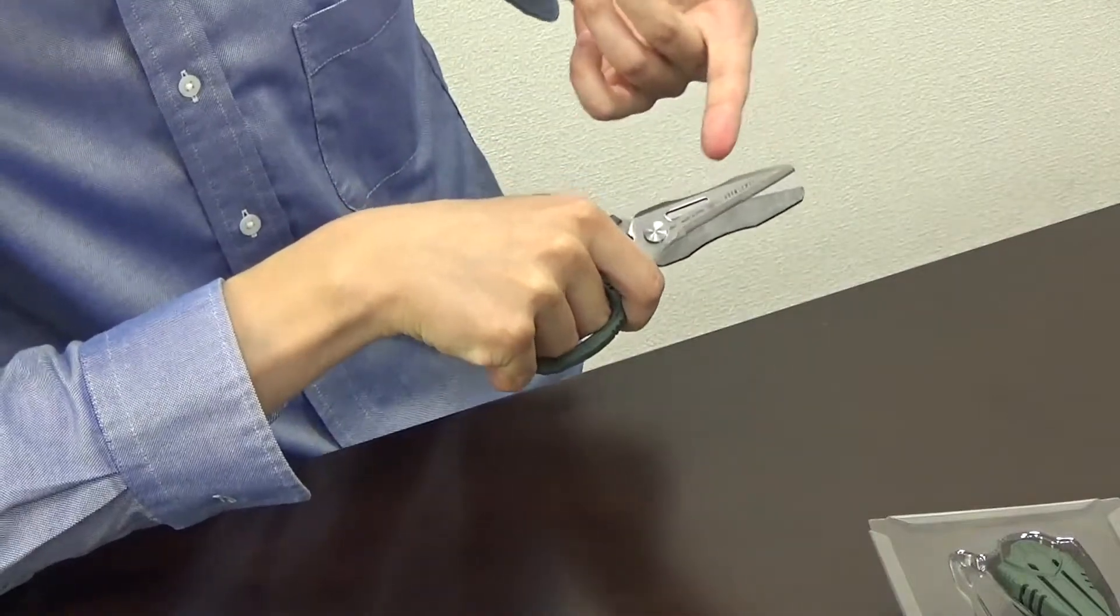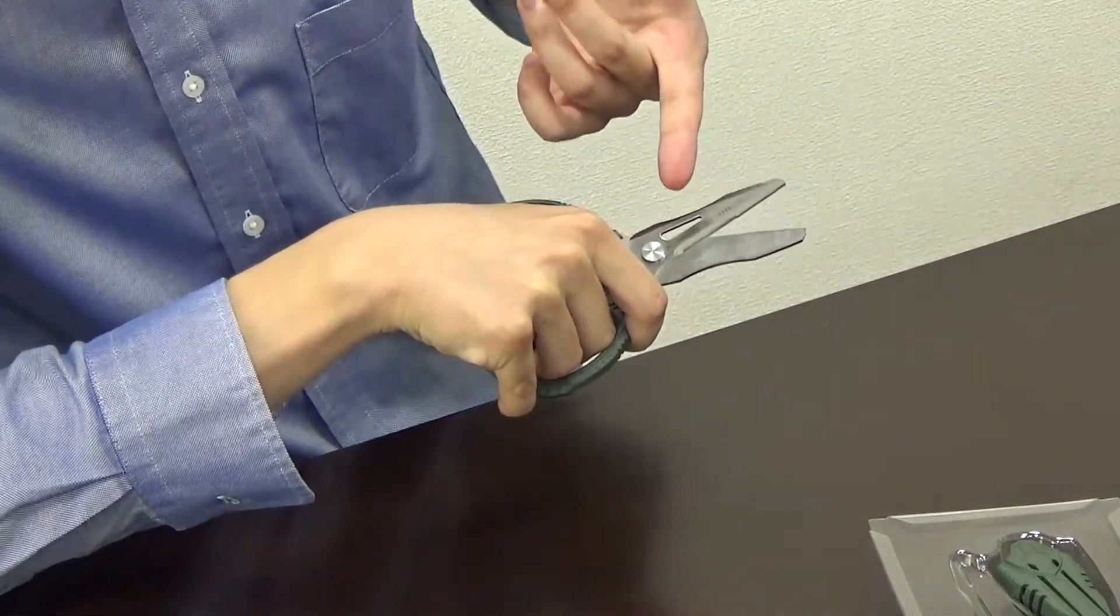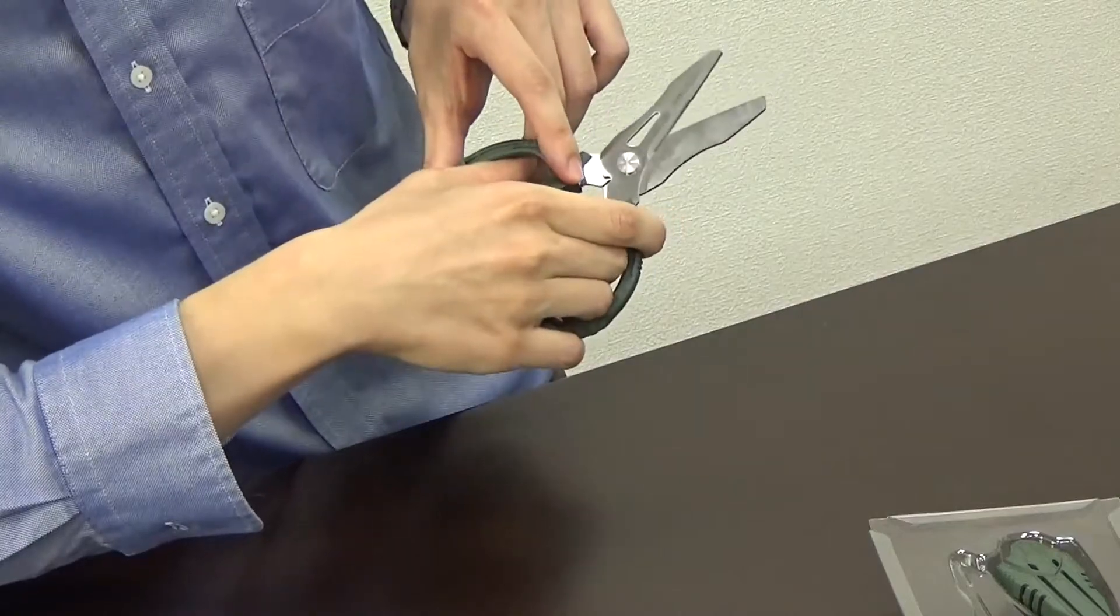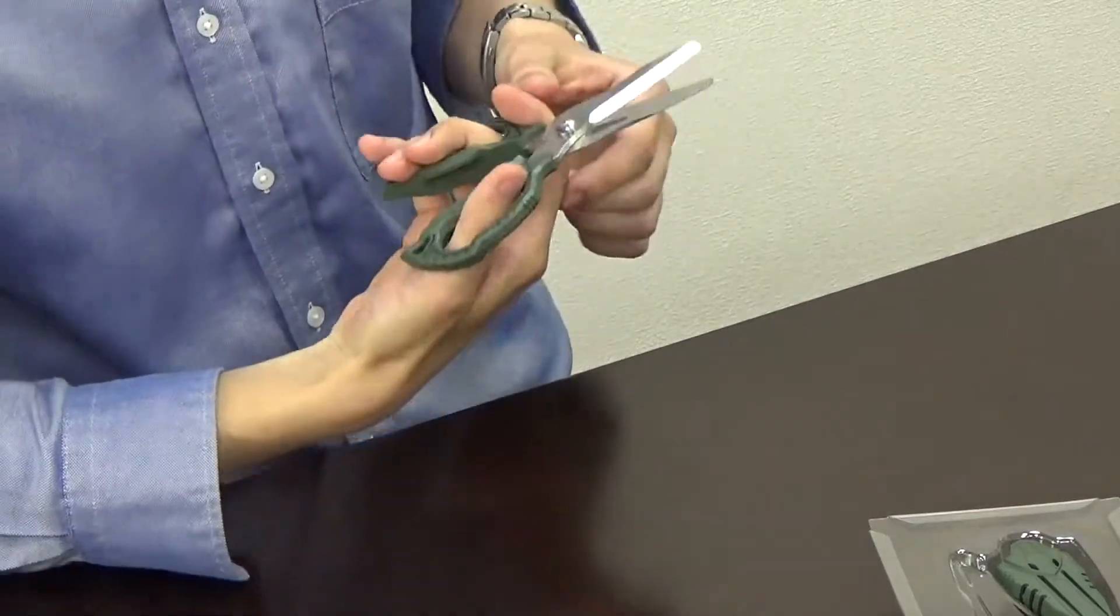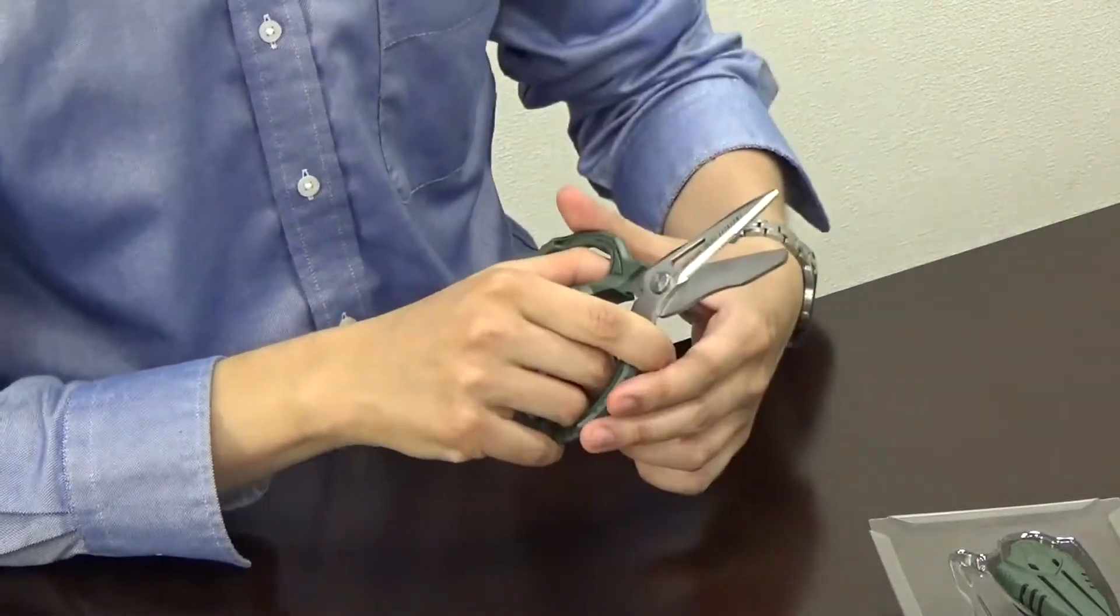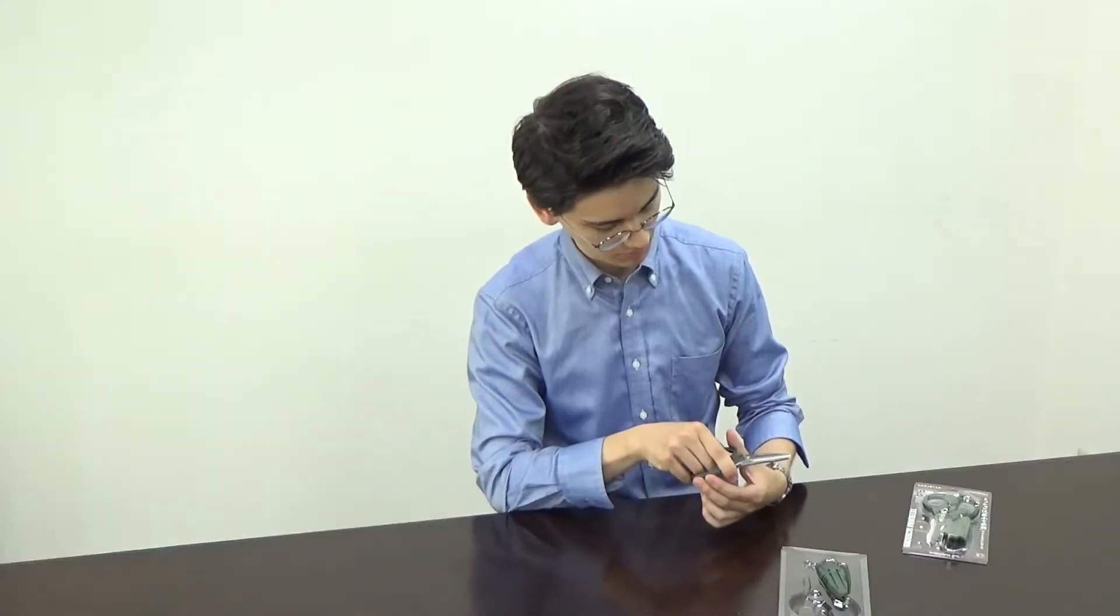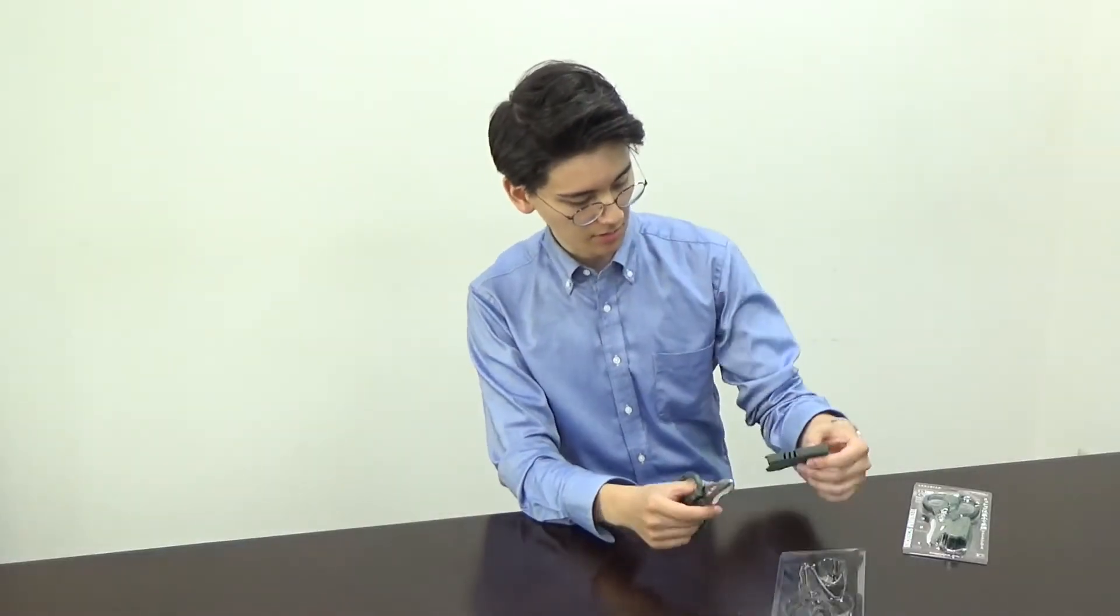We have the flat blade right here. The micro serrations. In the inside we have the wire cutter and at the outside we have the safety box opener. I have also this black cap right here.